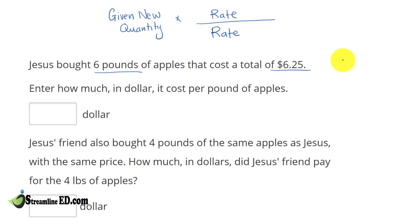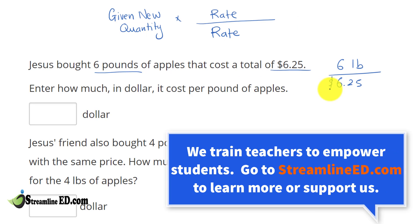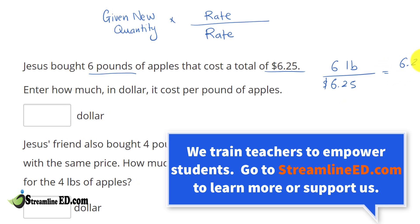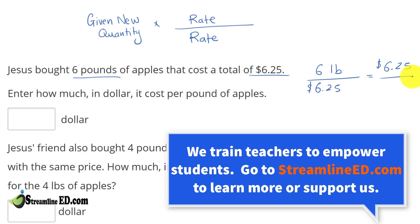So if I were to express this as a fraction or a ratio, we have 6 pounds of apple over $6.25 — so this is in dollars. And then this is also equivalent to, or equal to, $6.25 over 6 pounds of apple.